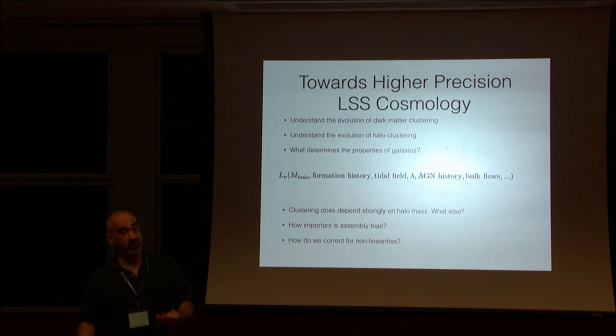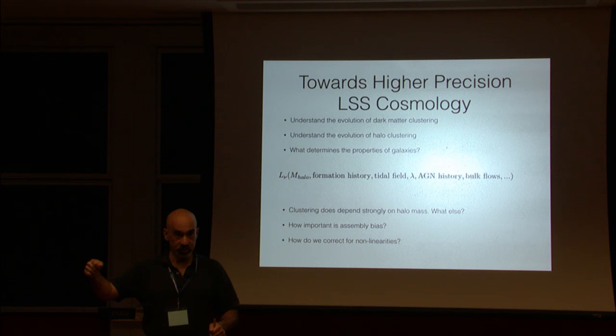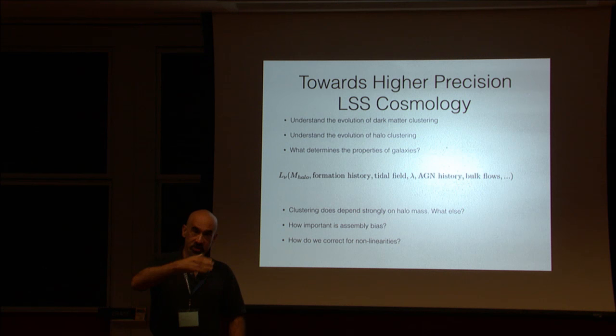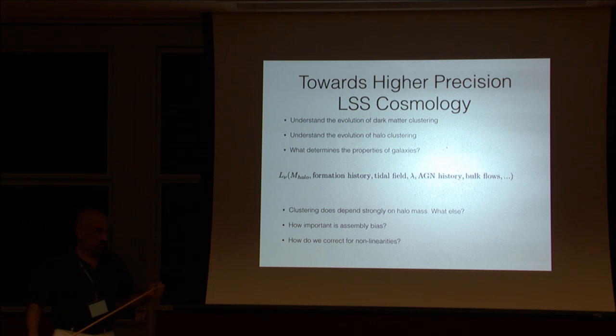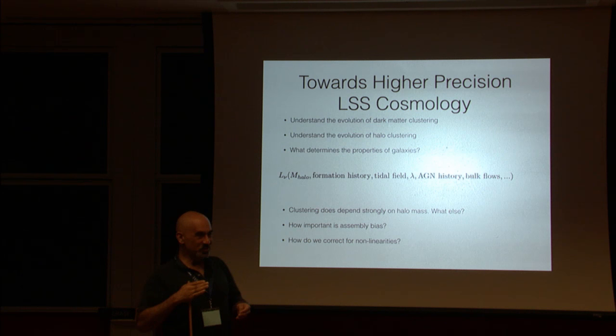At the level of galaxy evolution, you could either assume bias as a function of mass — something where I think we have some understanding — as a free function that you marginalize over, and that will give you one set of answers. Or you could actually go to a combination of numerical simulations and analytical theory and determine bias as a function of mass, and use that as the input — the right physics. My prejudice would be you'd like to marginalize over it and see if it gives you the same answer.